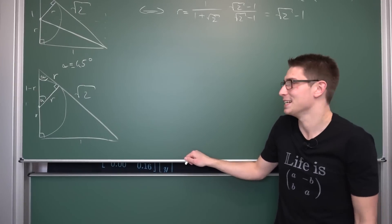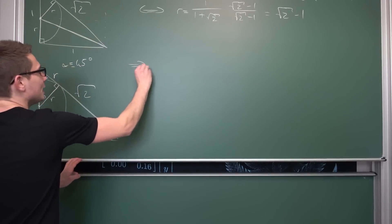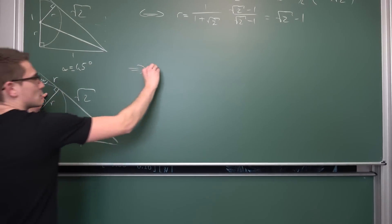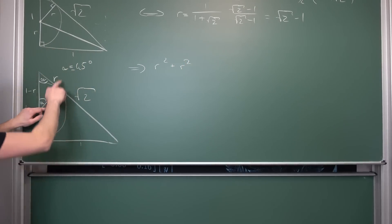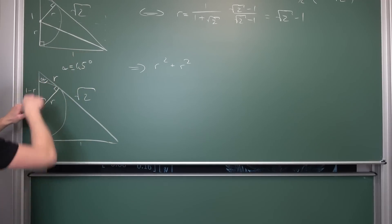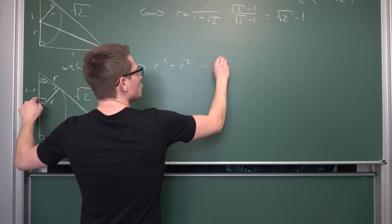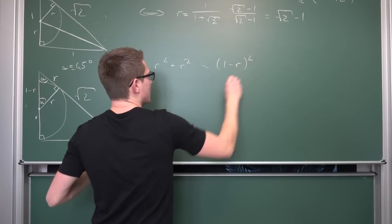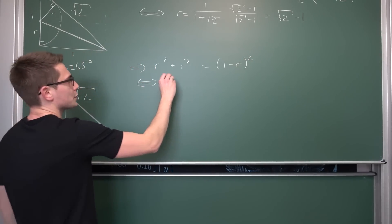And good thing is we know what this side length is. This is nothing but r. And we also know what this side length is. I mean the whole side length here is nothing but 1. We are going to take away the radius r from here, meaning this side length is nothing but 1 minus r. And now we can just simply use Papa Pythagoras here. It's as easy as this.